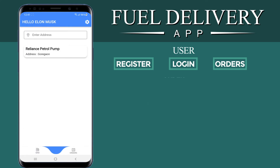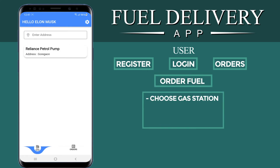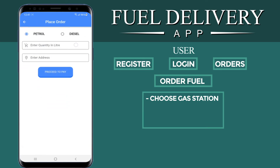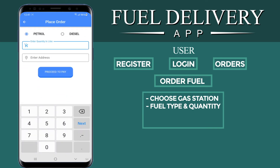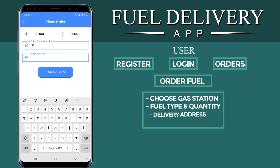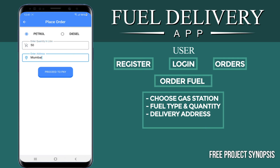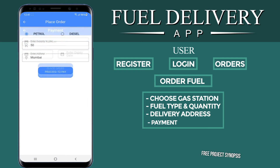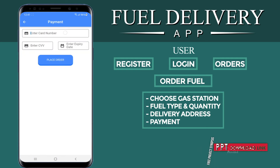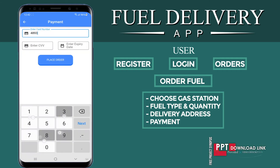We can select a petrol pump and then choose whether we need petrol or diesel, the quantity, and the address where we need it to be delivered. After this, you can pay using a credit or debit card.